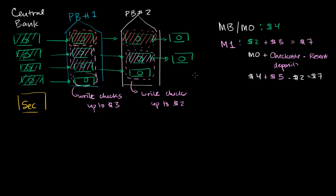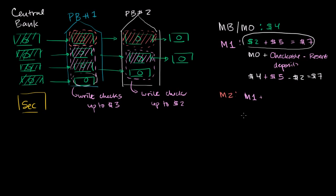The simplest way to think about M1 is: what can be used in this broader definition to facilitate transactions? That's the $2 in people's pockets and the ability to write up to $5 of checks — totaling $7. If we want to get even broader, we get to M2, which is what's immediately usable to facilitate a transaction right now — our $7 of M1 — plus things that can be easily converted to M1, like savings accounts, which might only take a couple of days to convert.